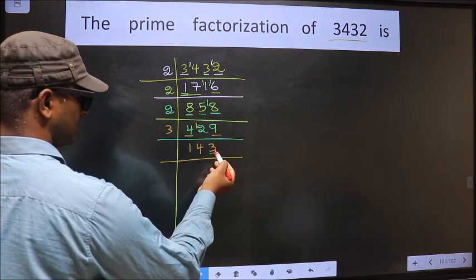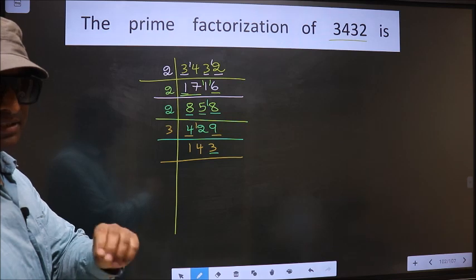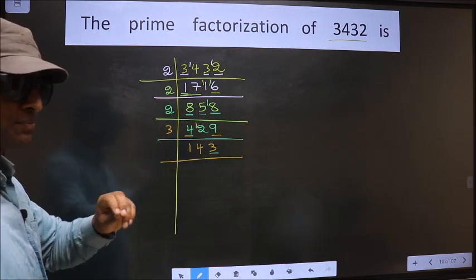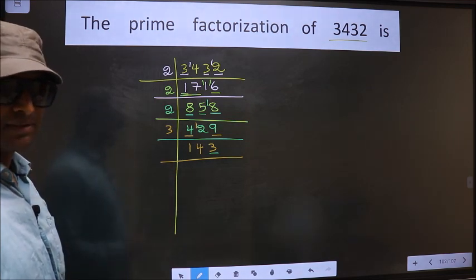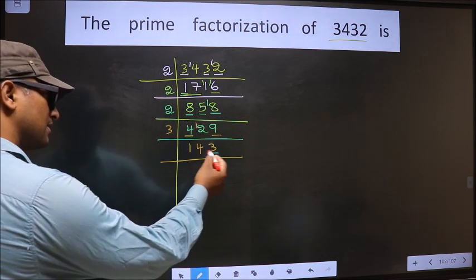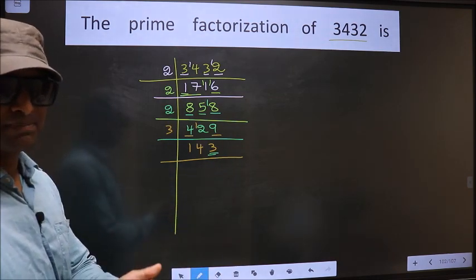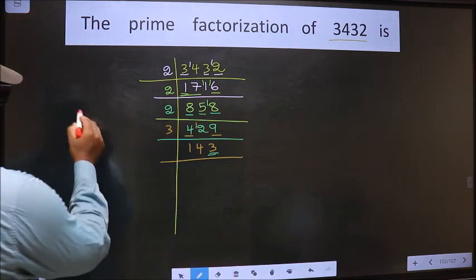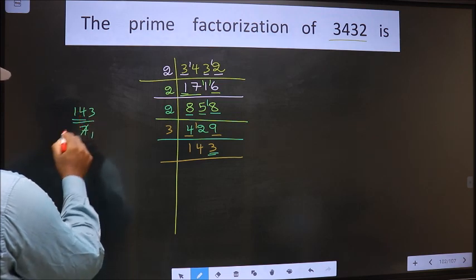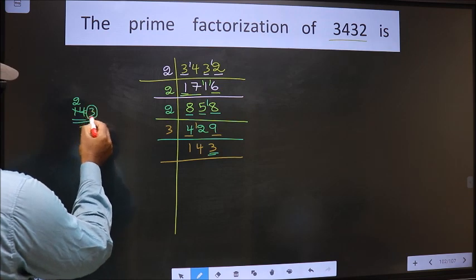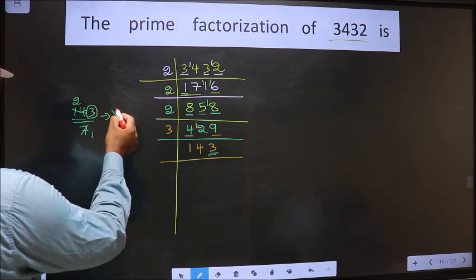Now for this number, the last digit is 3, not even, so this number is not divisible by 2. To check divisibility by 3, we add the digits: 1 plus 4 plus 3. We get 8. Is 8 divisible by 3? No, so this number is not divisible by 3. Next prime number 5 — the last digit is neither 0 nor 5, so this number is not divisible by 5. Next prime number 7. Checking 143 by 7: 7 ones — here we have 14. When do we get 14 in the 7 table? 7 twos, 14. We have number 3 remaining — 3 is not in the 7 table, so this number is not divisible by 7.